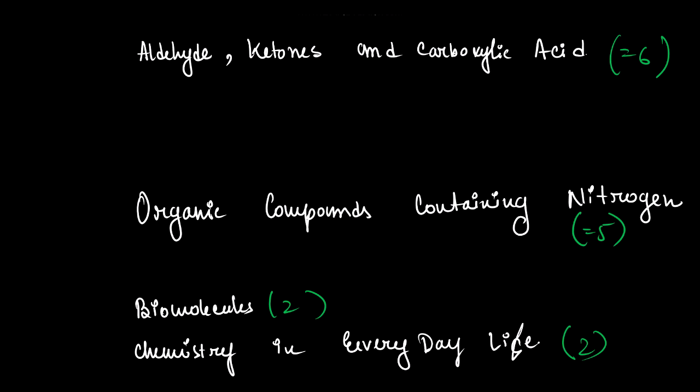From the organic part, Aldehyde, Ketone and Carboxylic Acid has more importance. As I have told you, if you have basic knowledge you can solve the questions just by seeing them properly — if you can remember the reagents, organic chemistry is nothing. Organic Compounds Containing Nitrogen also has five marks, which is very close to six marks, so nitrogen compounds are also important from the organic part.